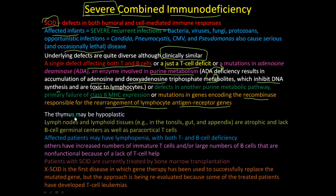The thymus may be hypoplastic, and lymphoid tissues including lymph nodes, tonsils, and the appendix can be atrophic — they're not growing. There can also be a lack of B cell germinal centers as well as T cell paracortical histology.